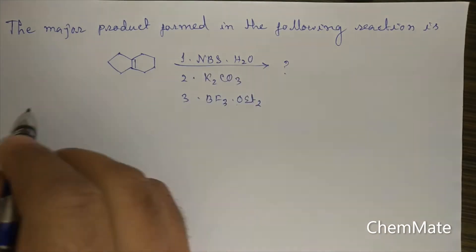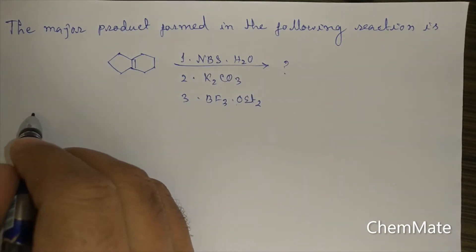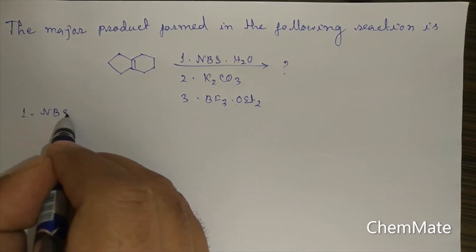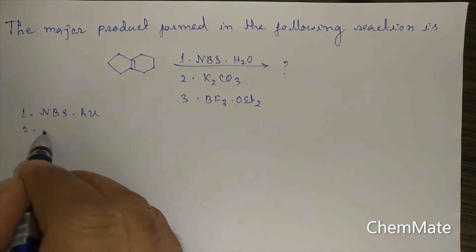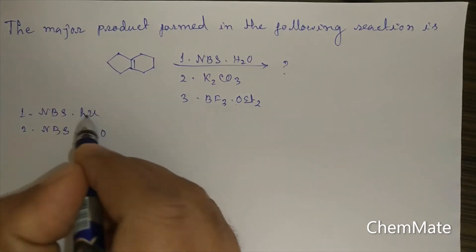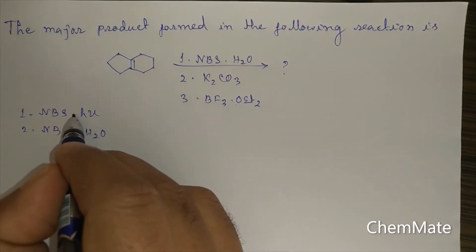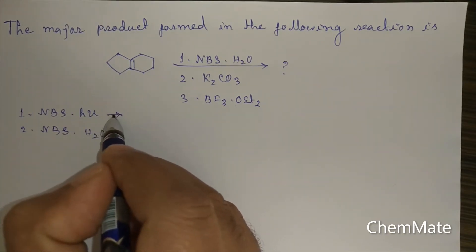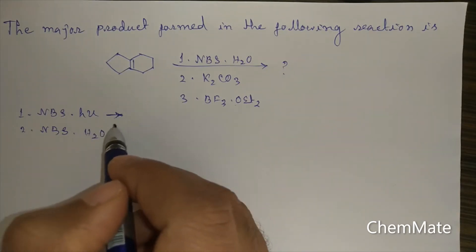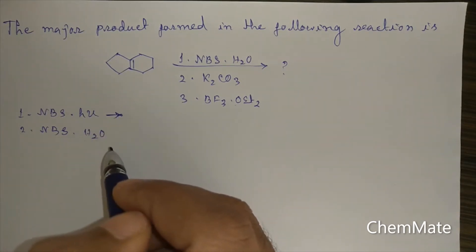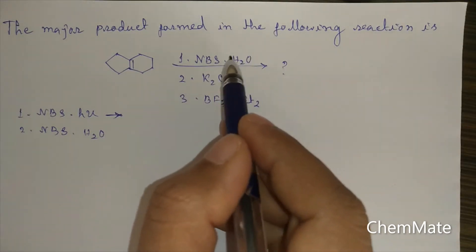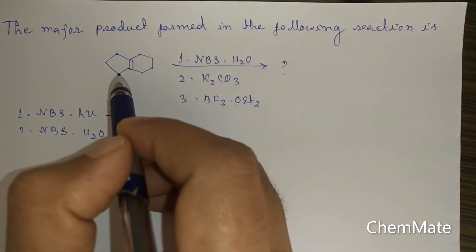NBS reacts under two conditions: one is NBS in photochemical conditions, and another is NBS in the presence of H2O. NBS in photochemical conditions will brominate at the allylic position, so allylic bromination takes place and the mechanism is a free radical mechanism.